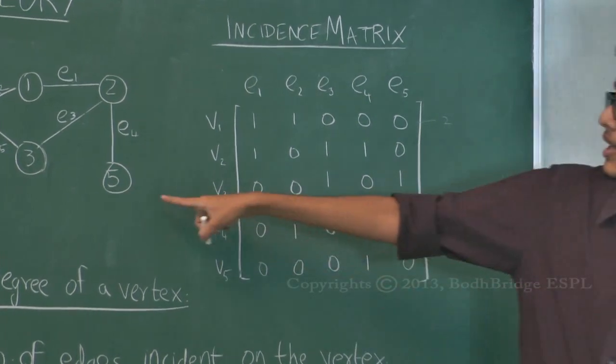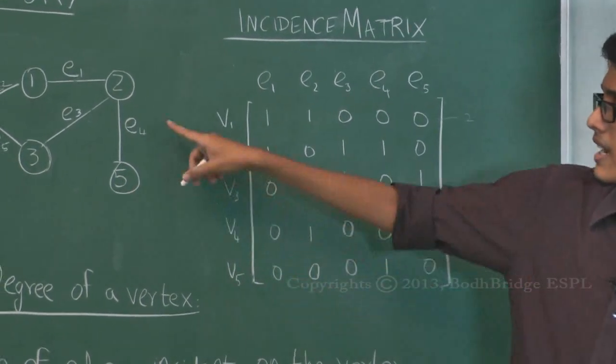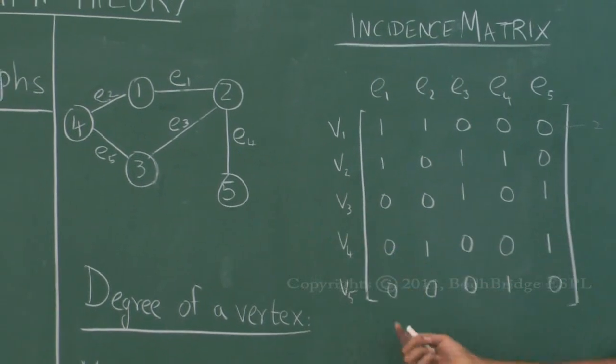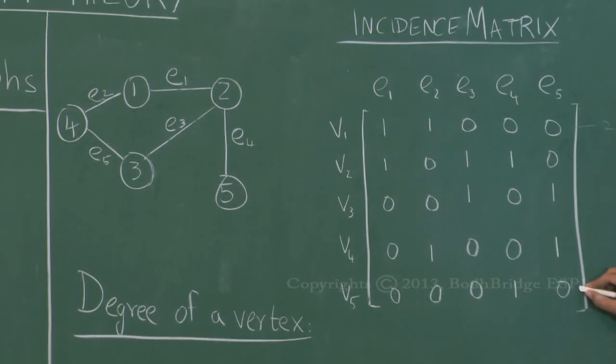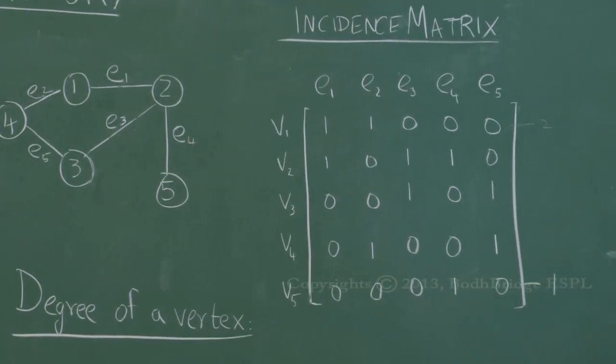The sum of each row equals the degree of the vertex. For vertex 5, only edge 4 is incident on it, so the row sum is 1 — and that is the degree of vertex 5.